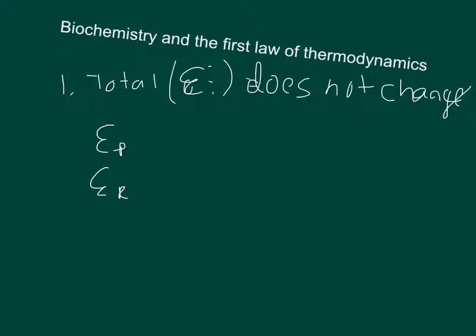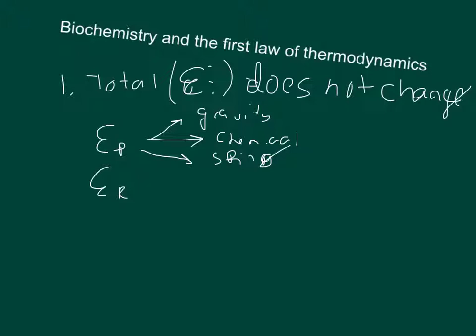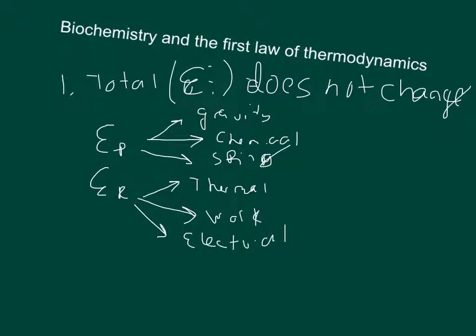Kinetic energy can be broken down into several things, and so can potential energy. Potential energy can include energy in a gravitational field, energy in chemical bonds, or energy in a compressed or stretched spring. There are also many types of kinetic energy — for example, thermal energy is the random kinetic energy of atomic particles such as atoms and molecules. There's also work and electrical energy. The total energy of a system is all of the potential and kinetic energy it contains.